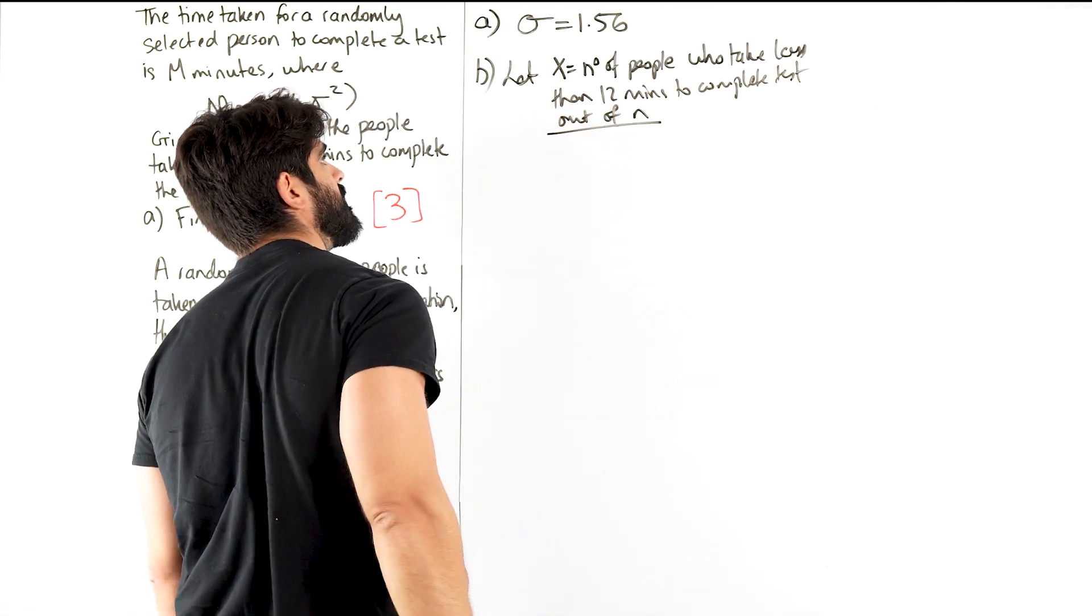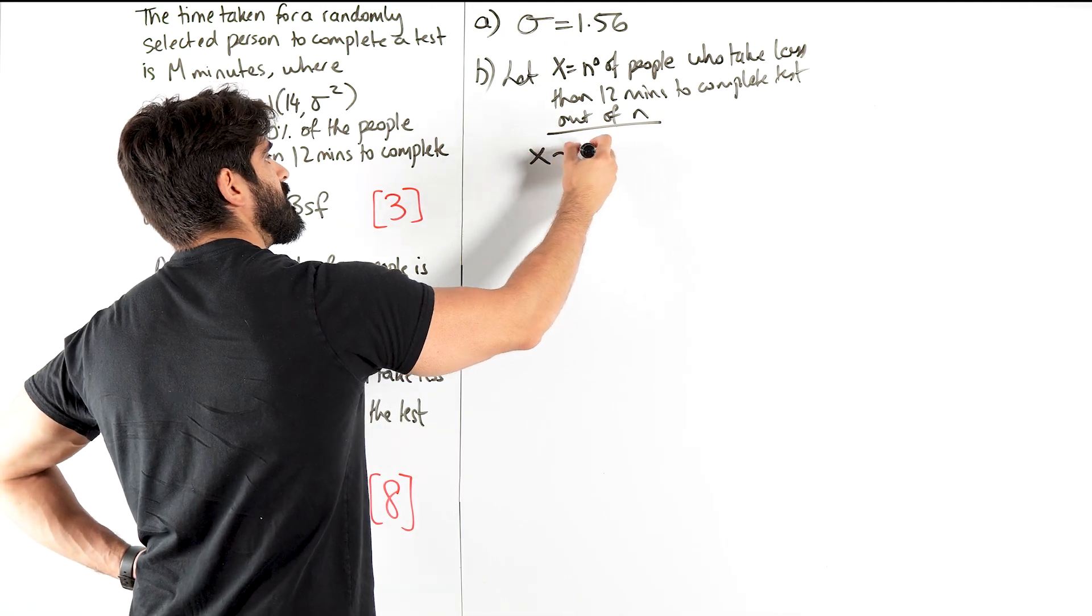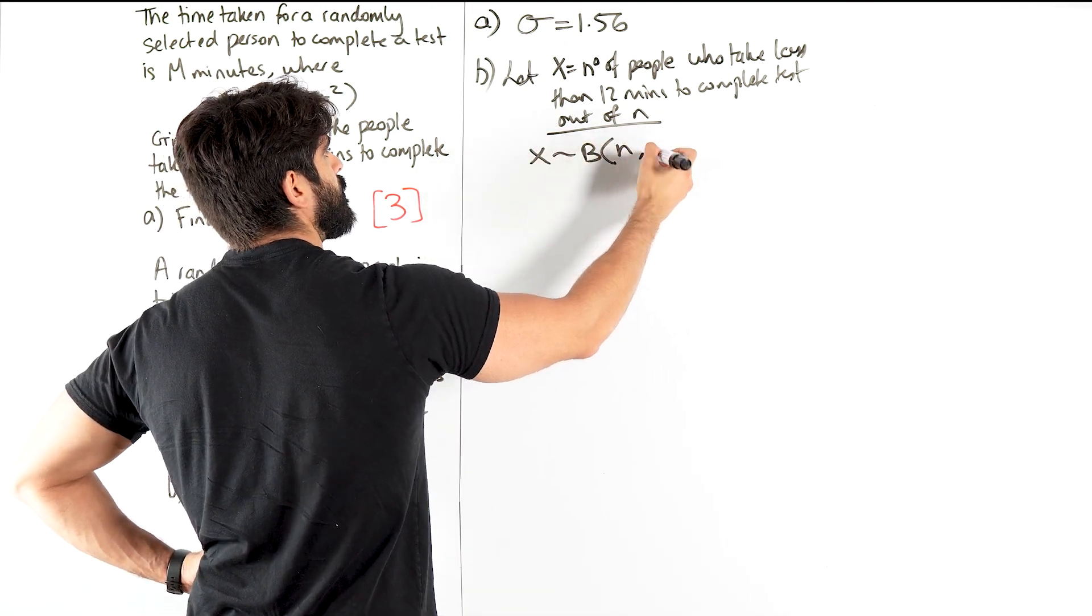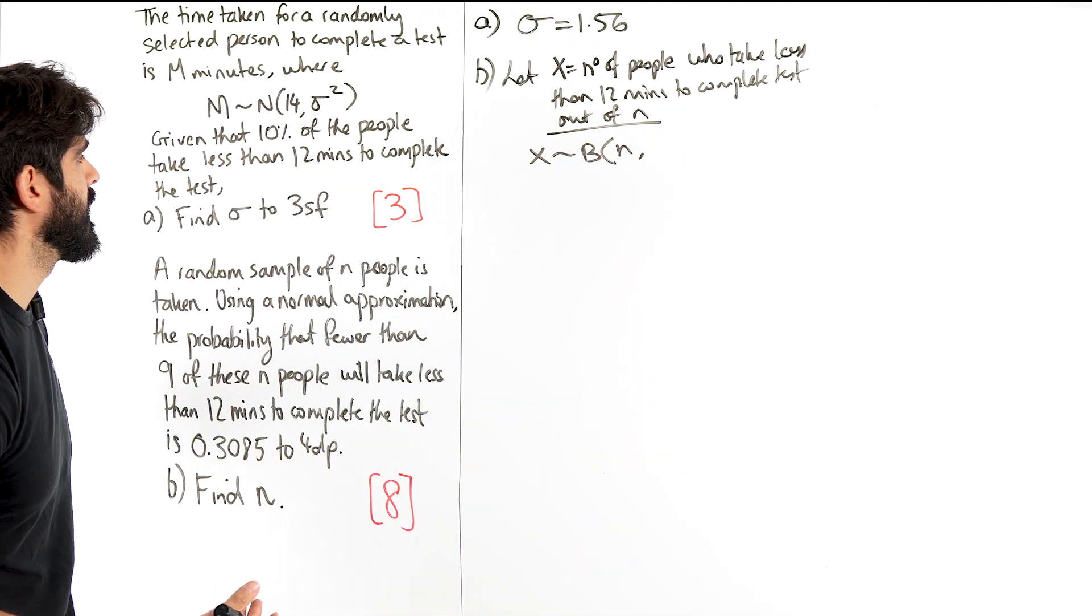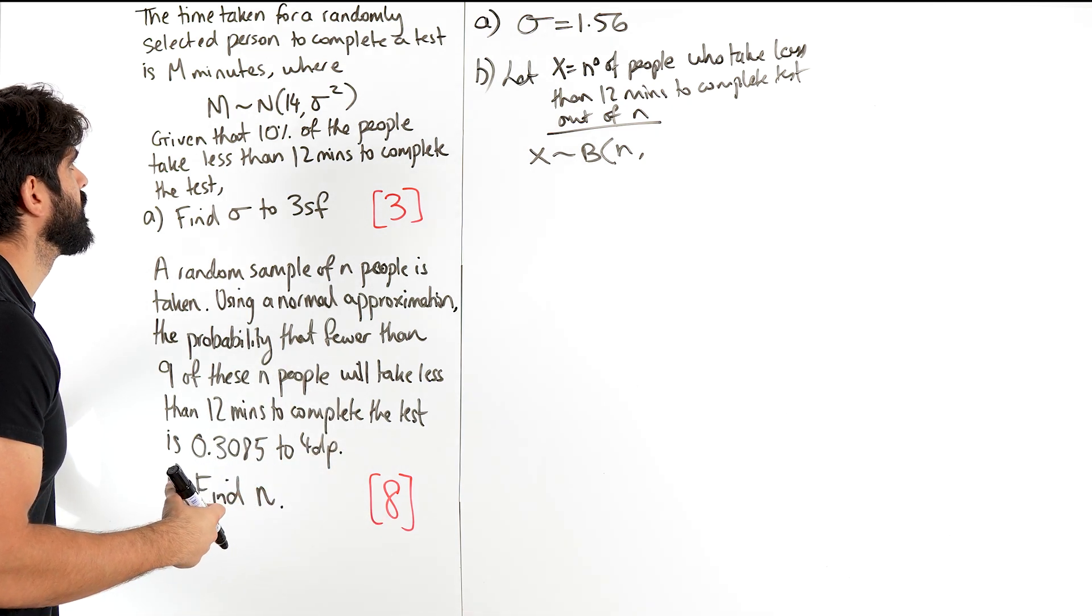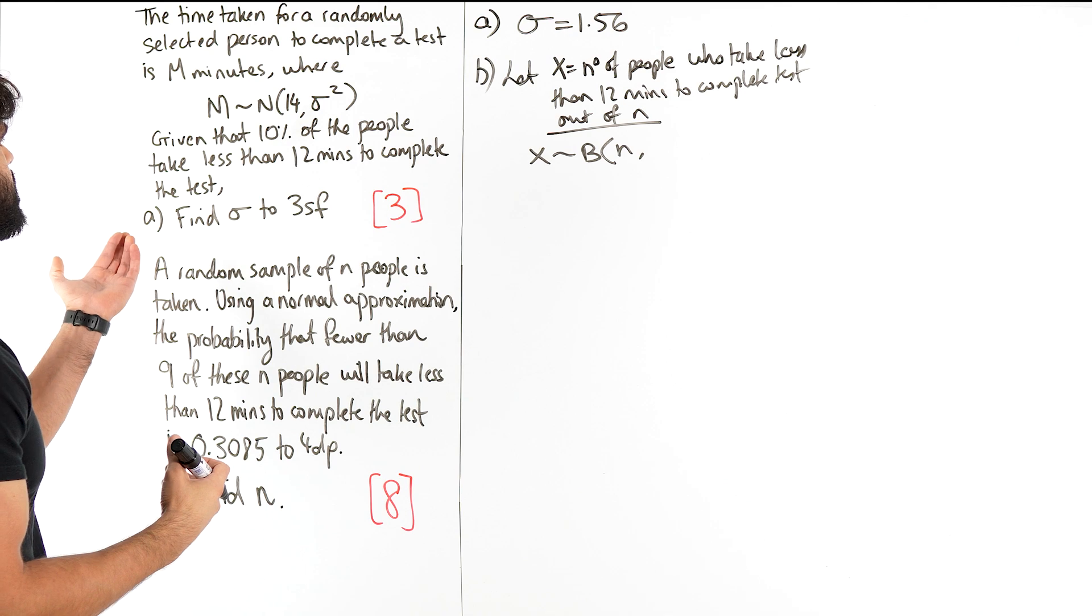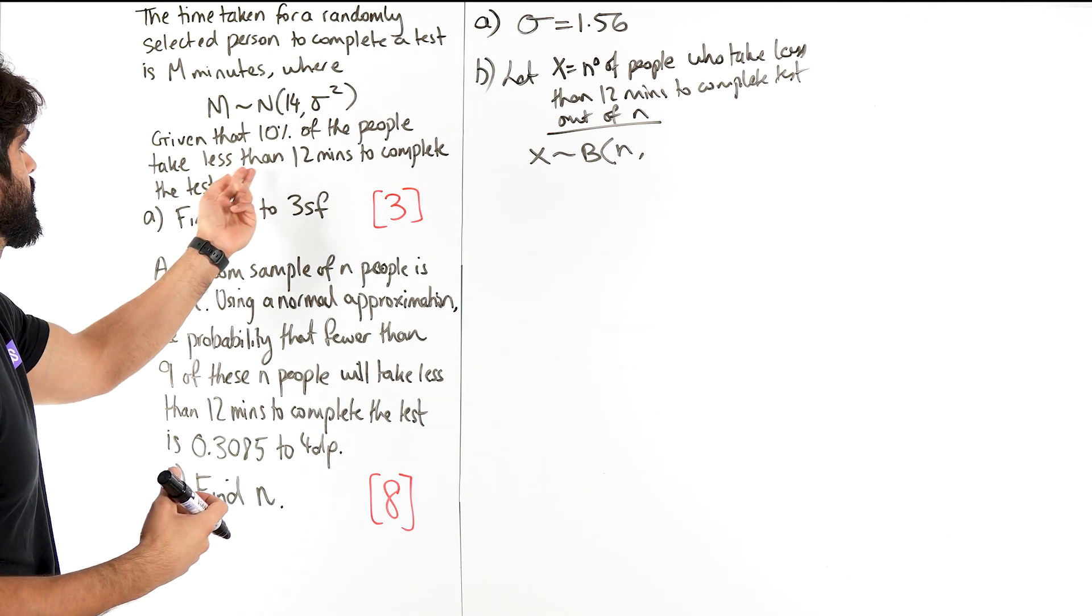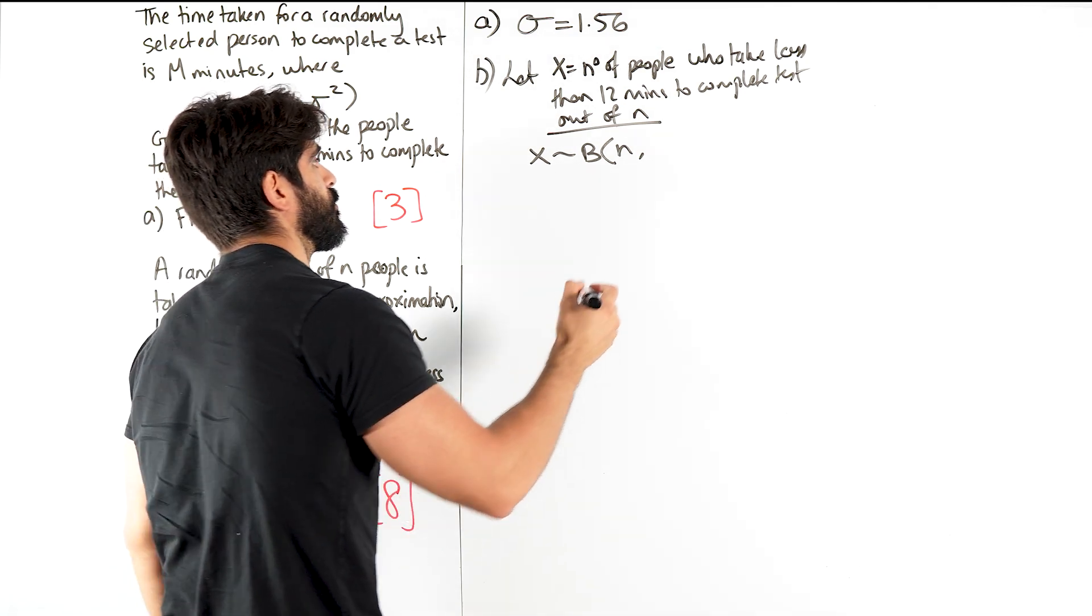Yeah, it's out of n this time. So X is binomially distributed with n people and the probability that it takes less than 12 minutes to complete the test, well, it's 0.1 isn't it? Given that 10% of the people take less than 12 minutes, so 0.1.